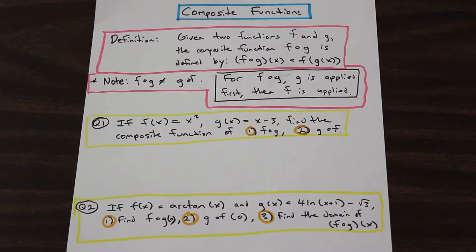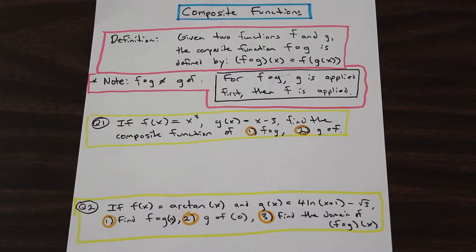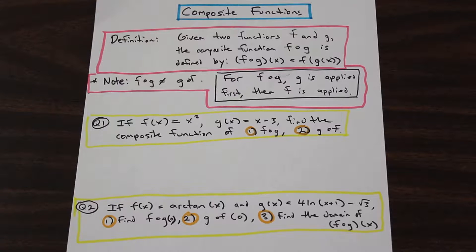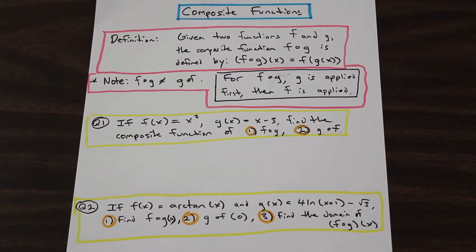So enough talking, let's get into the questions. Question one: if f of x is equal to x squared, and g of x is equal to x minus 3, find the composite function of f circle g and of g circle f.